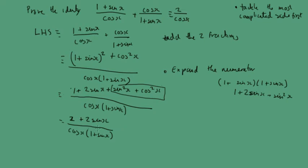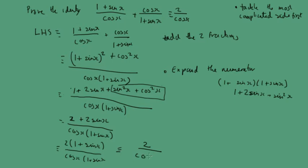We can see that sine squared x plus cosine squared x equals 1. So we have 1 plus 1 plus 2 sine x, which gives 2 plus 2 sine x, over cosine x times (1 plus sine x). Simplifying the top by taking out a factor of 2: 2 times (1 plus sine x) over cosine x times (1 plus sine x). The (1 plus sine x) cancels, giving us 2 over cosine x, which is what we have on the right-hand side.